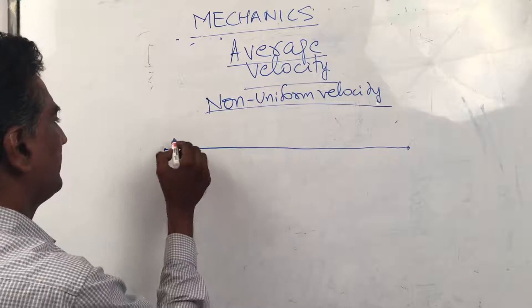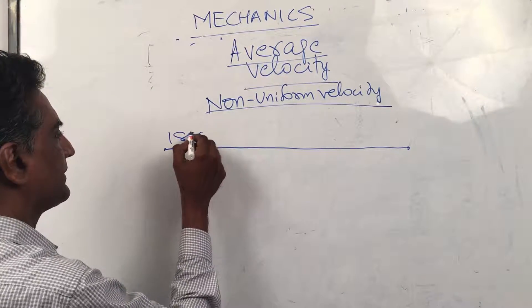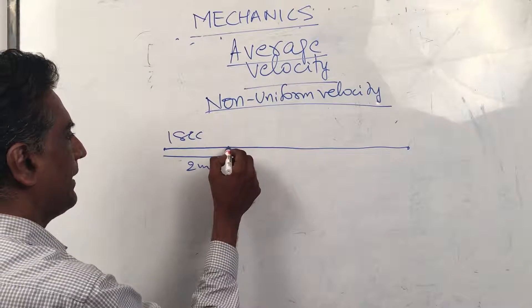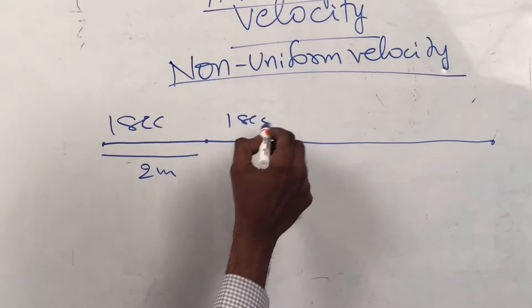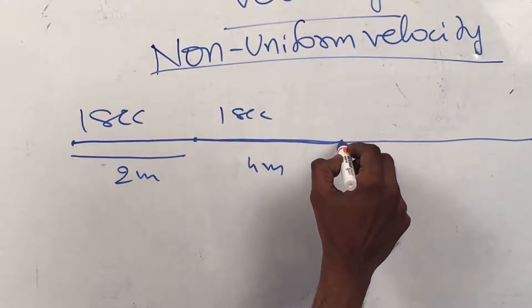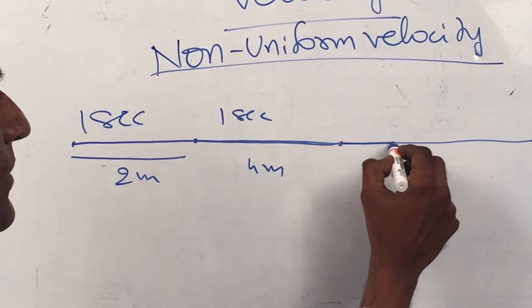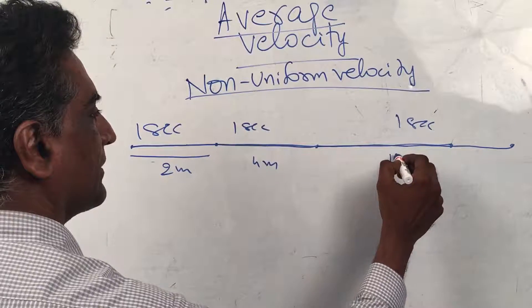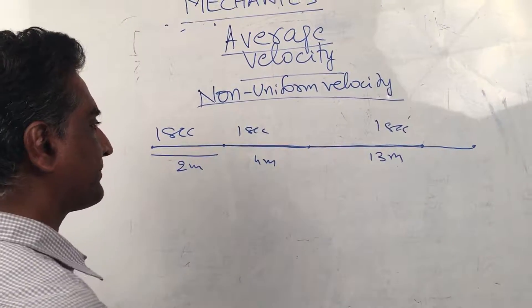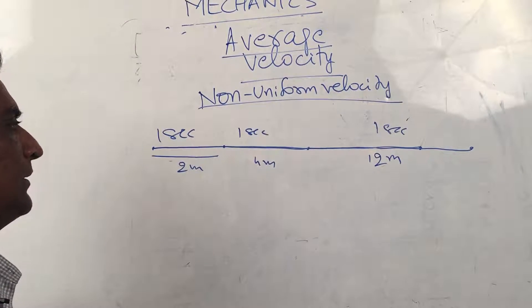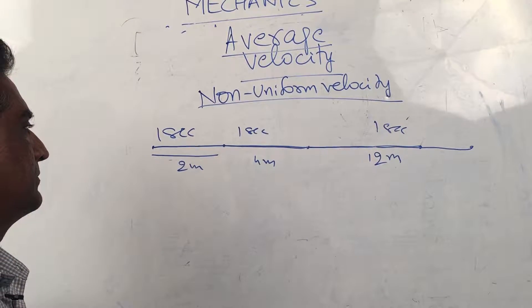...then we will take equal intervals. In one second it goes, let's say, 2 meters, and in the next second it goes 4 meters, and in the next second it goes 13 meters—it goes very fast. Or let's say 12 meters to make it simpler.